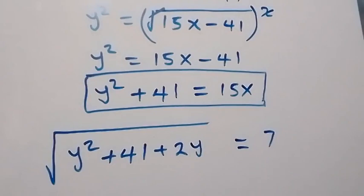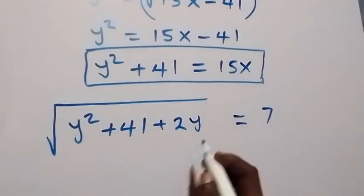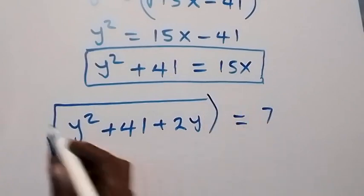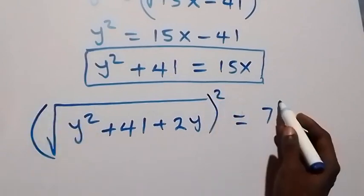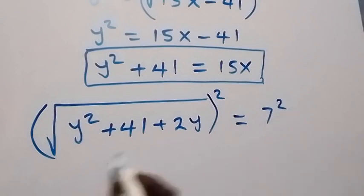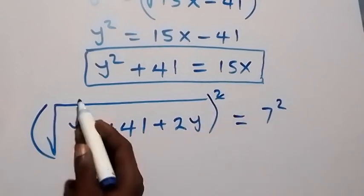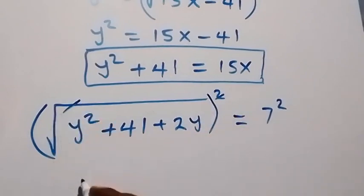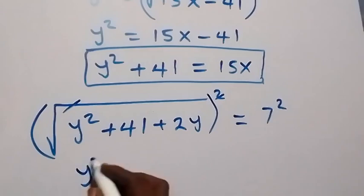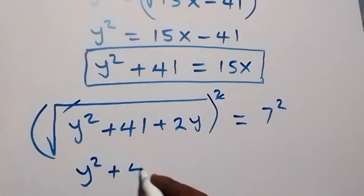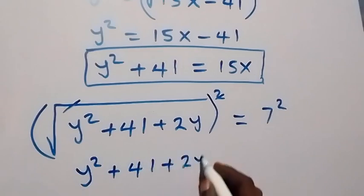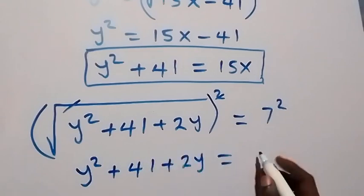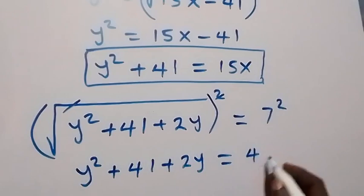From here, we square both sides. The square cancels the square root on the left. This gives us y squared plus 41 plus 2y equals 7 squared, which is 49.